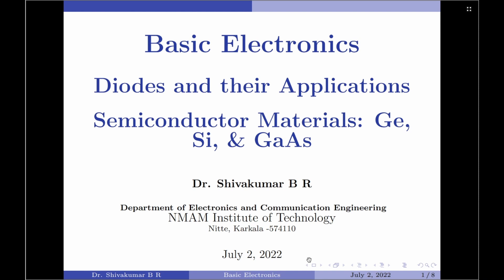Particularly, I will be discussing the three most commonly used semiconductor materials in the electronic field, which are germanium, silicon, and gallium arsenide.